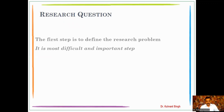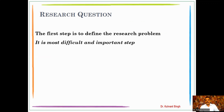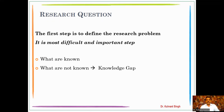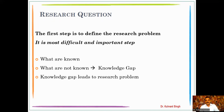Regarding the research question — the first step is to define the research problem. It is the most difficult and important step during the research. We need to know what is known, meaning what is available in the existing literature, and what is unknown — information not available in the literature. That is the knowledge gap, or we can say it is the research gap.